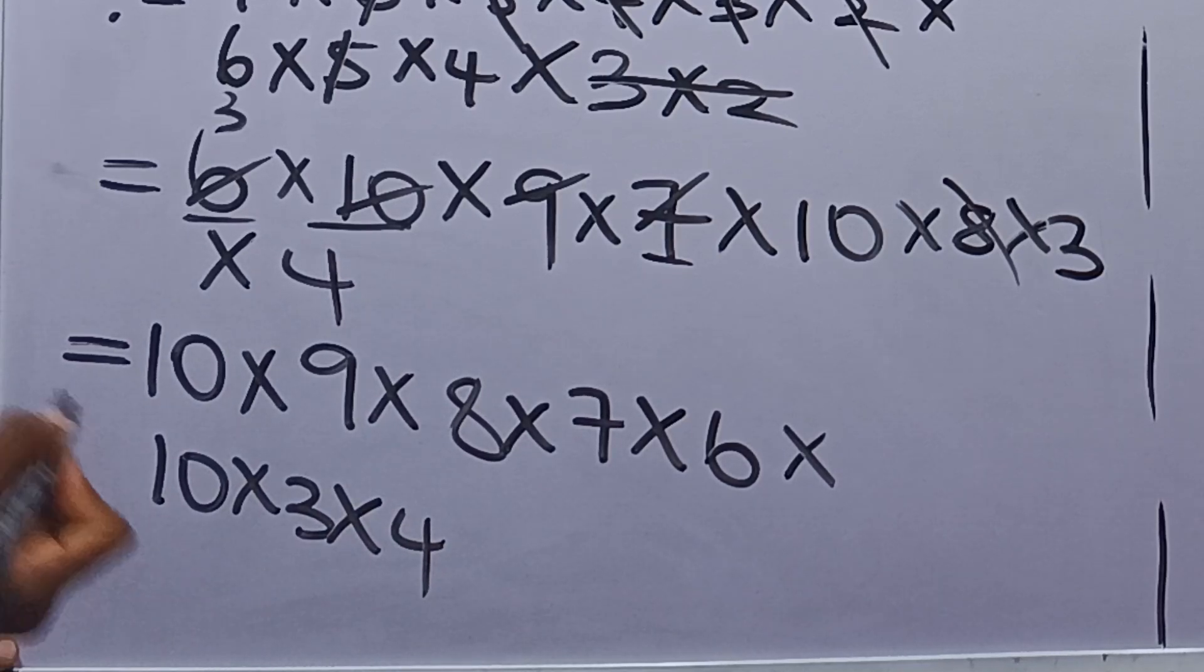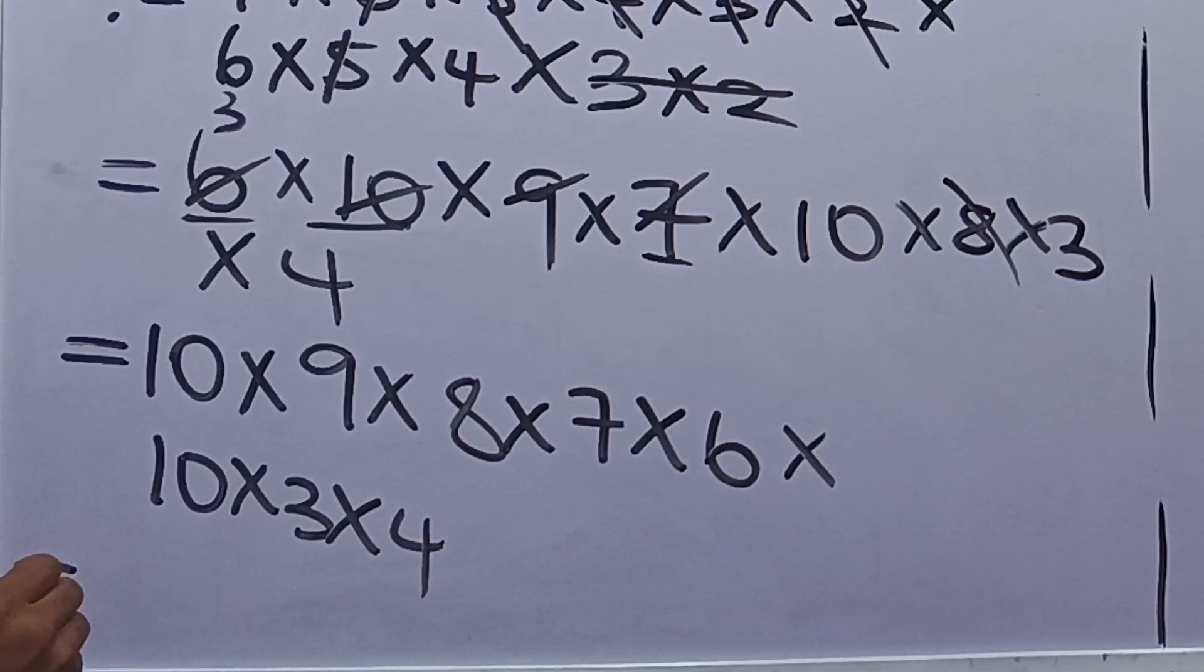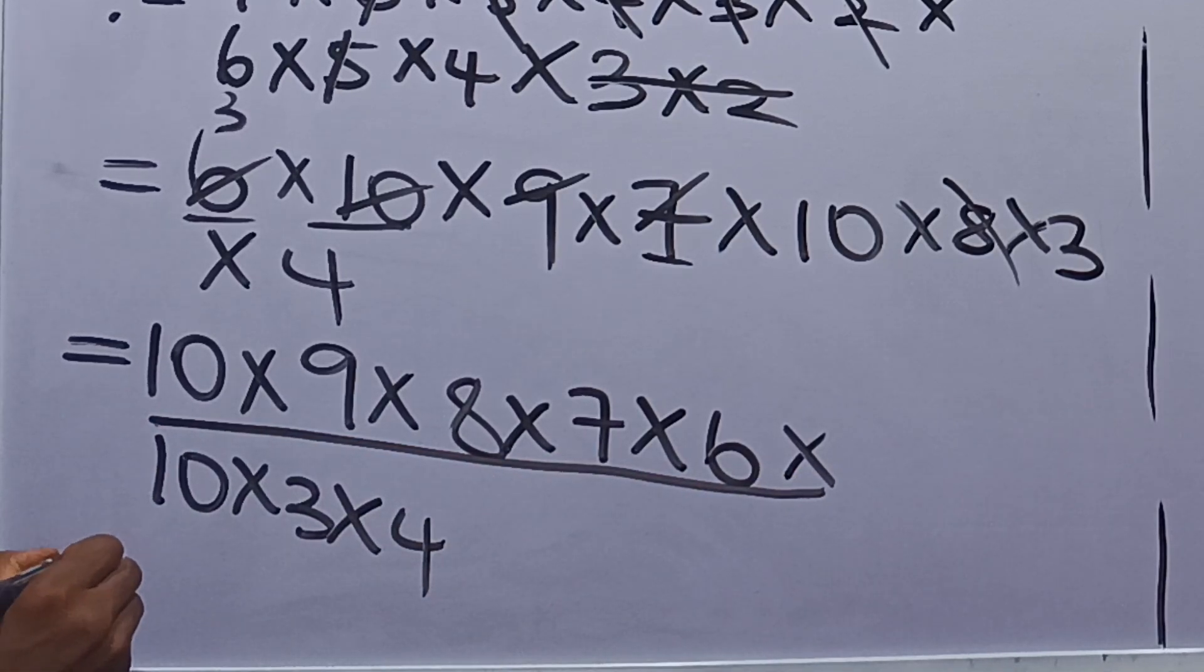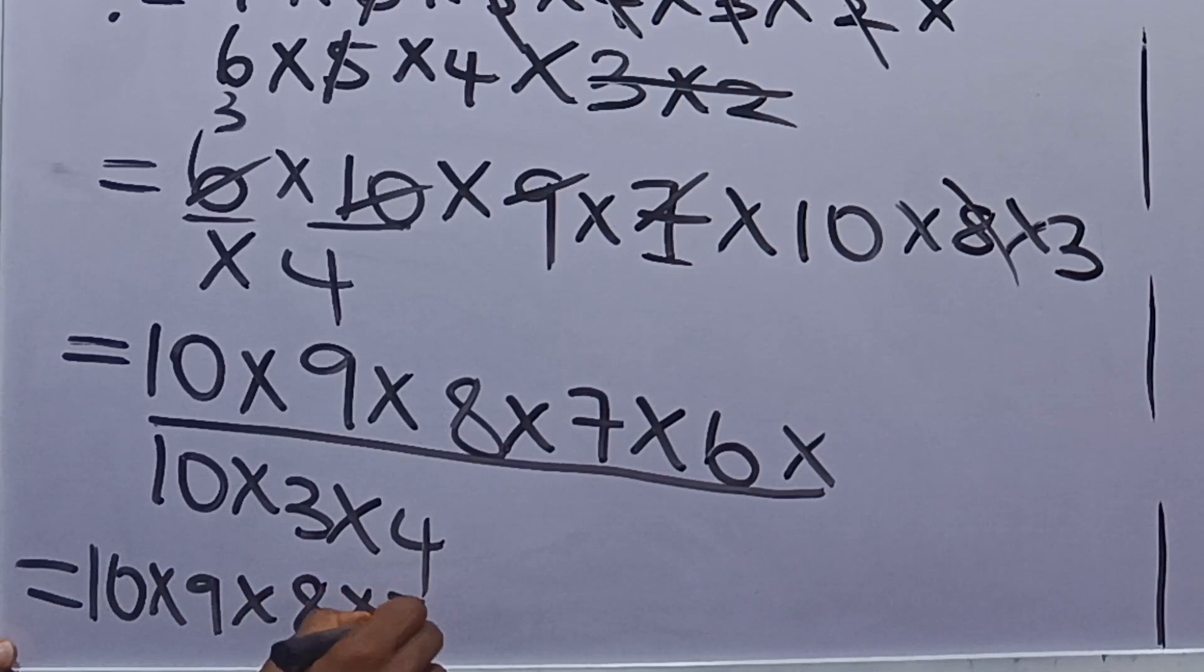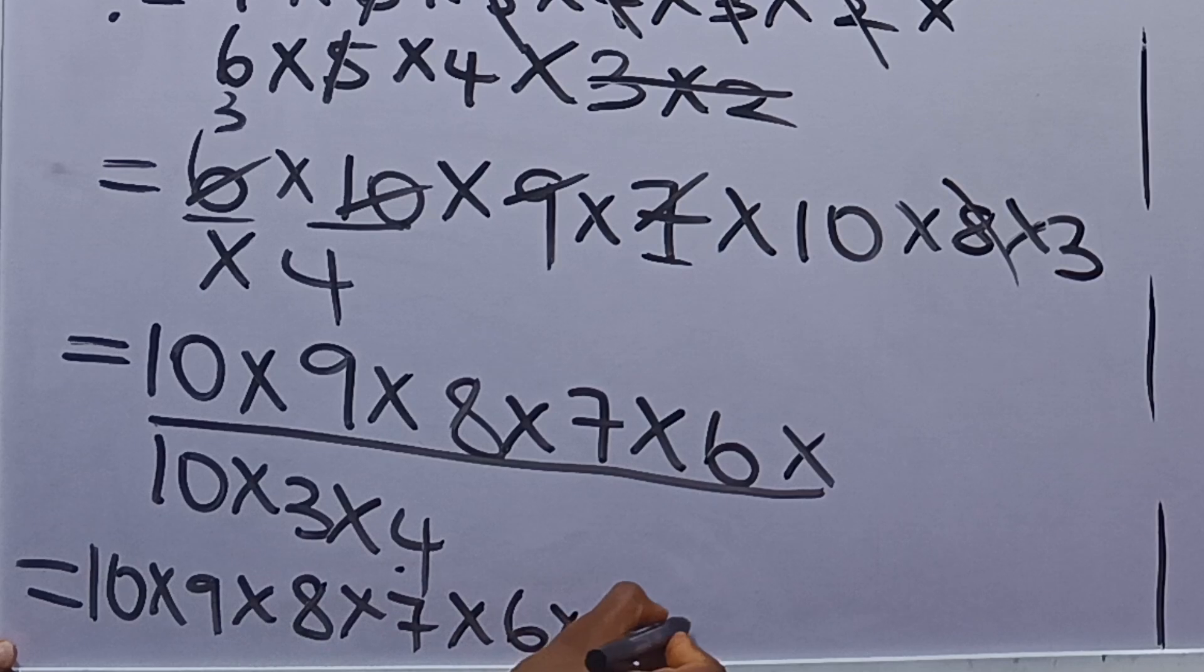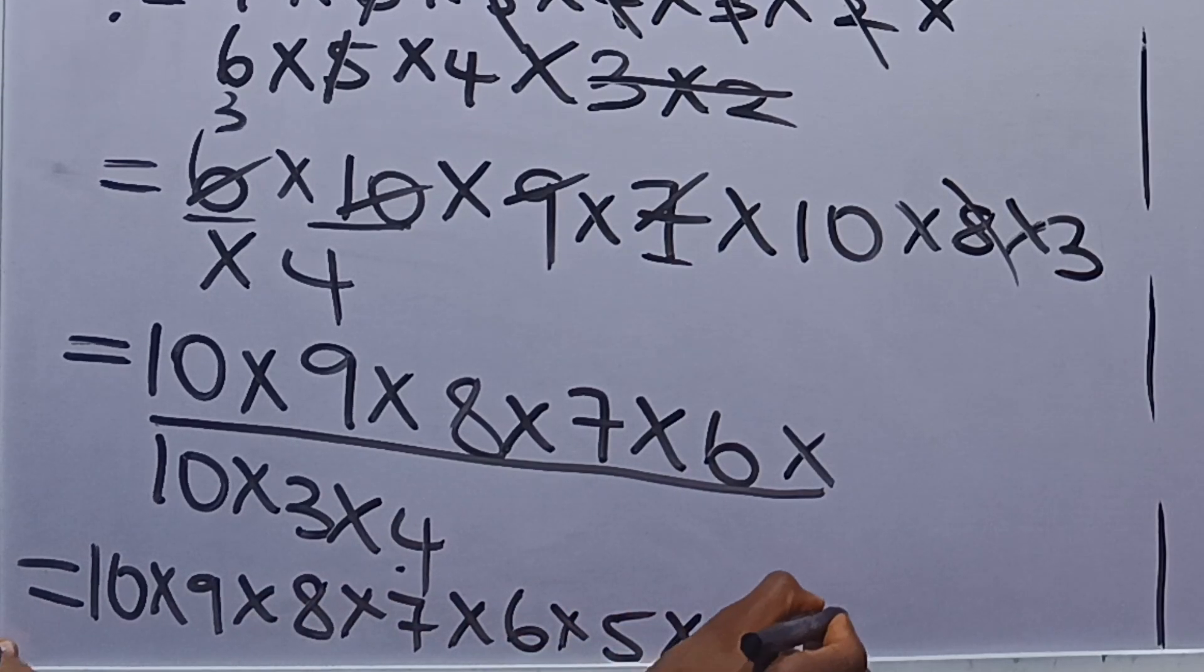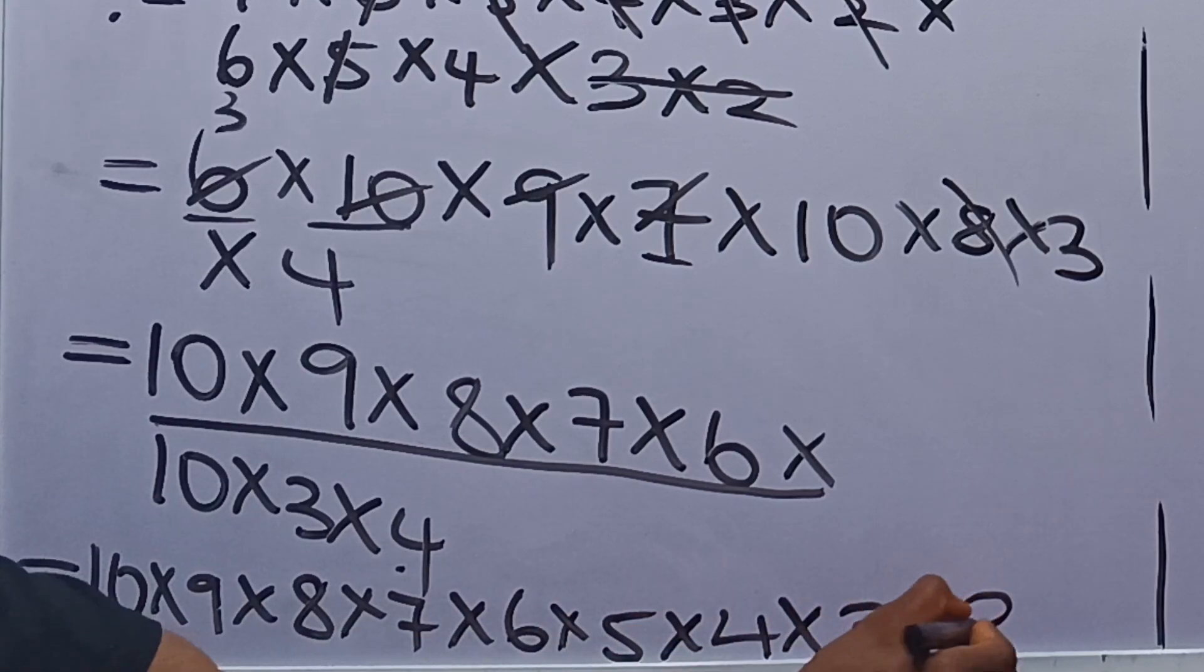Now 10 can be said to be 5 times 2. So we have this to be equal to this whole thing. So we have 10 times 9 times 8 times 7 times 6. 10 is 5 times 2, so we have times 5. Now we have 4, times 4. We have 3, times 3. And we said 10 is 5 times 2, so we have times 2.